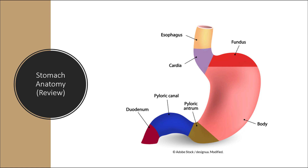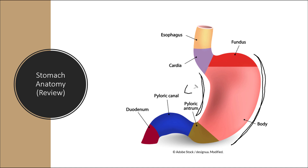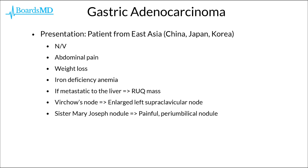Just to briefly review some anatomy of the stomach: the long end is referred to as the greater curvature, whereas the shorter end is referred to as the lesser curvature. This will come into play in our discussion of intestinal versus diffuse types of gastric cancer, as the intestinal subtype of gastric adenocarcinoma really likes to affect this lesser curvature of the stomach.